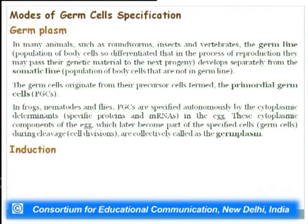The germ plasm mode states that in many animals such as roundworms, insects, and vertebrates, the germ line develops separately from the somatic line. The germ cells originate from precursor cells termed primordial germ cells. The germ line gives rise to cells forming the gametes, set apart from the somatic line which gives rise to the rest of the body's cells.